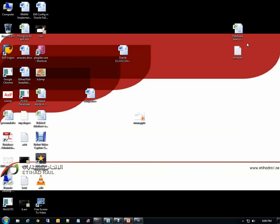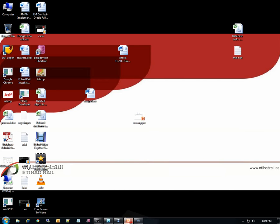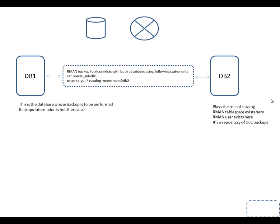RMAN is basically a tool recommended by Oracle to perform all kinds of backups and recovery of Oracle databases. In this tutorial, we have got two databases: one database named DB1 and a second database named DB2. We also have some storage media — both disk media and tape media. We are going to perform backups of DB1 and keep those backups on disk.